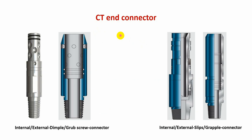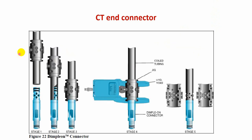Other connector types with higher pulling strength include the dimple connector, grab-screw connector, and internal-external slips connector (also called gravel connector with slips). As you can see, it is inserted inside the coiltube and cannot be pulled back due to the slip section.